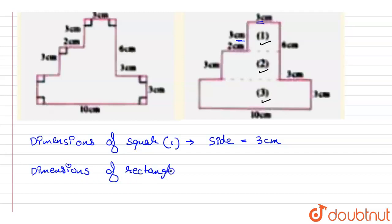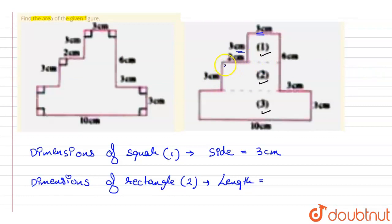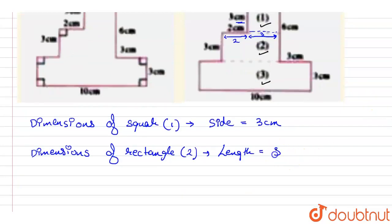Now, the dimensions of rectangle number two: the length of this rectangle — we can see that this part is 2 cm, and this part is 3 cm (same as the square's side), so the total length is 5 cm. The breadth is given as 3 cm.